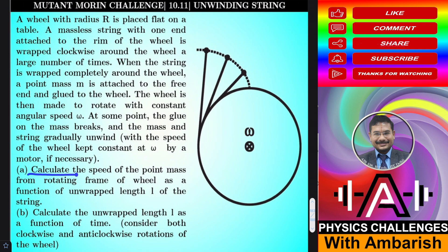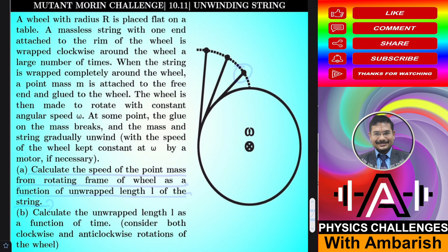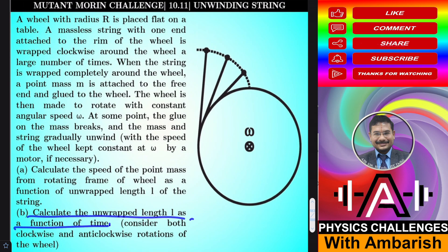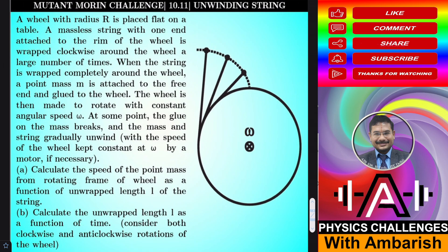At some point the glue on the mass breaks and the mass and string gradually unwind, with the speed of the wheel kept constant at omega by a motor if necessary. Part one: calculate the speed of the point mass from the rotating frame of the wheel as a function of unwrapped length L — and the challenge is to do this without integration. Part two: calculate the unwrapped length as a function of time, considering both clockwise and anticlockwise rotations.